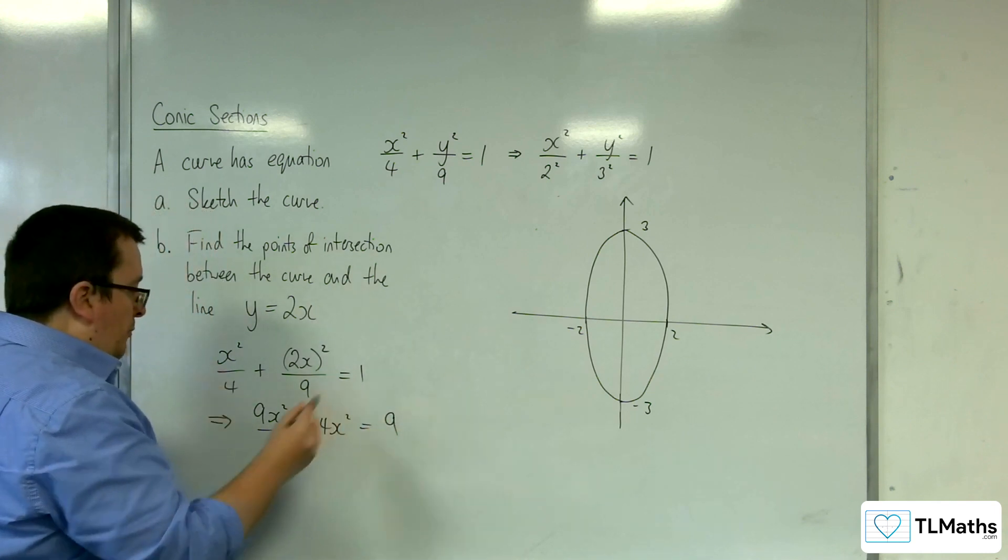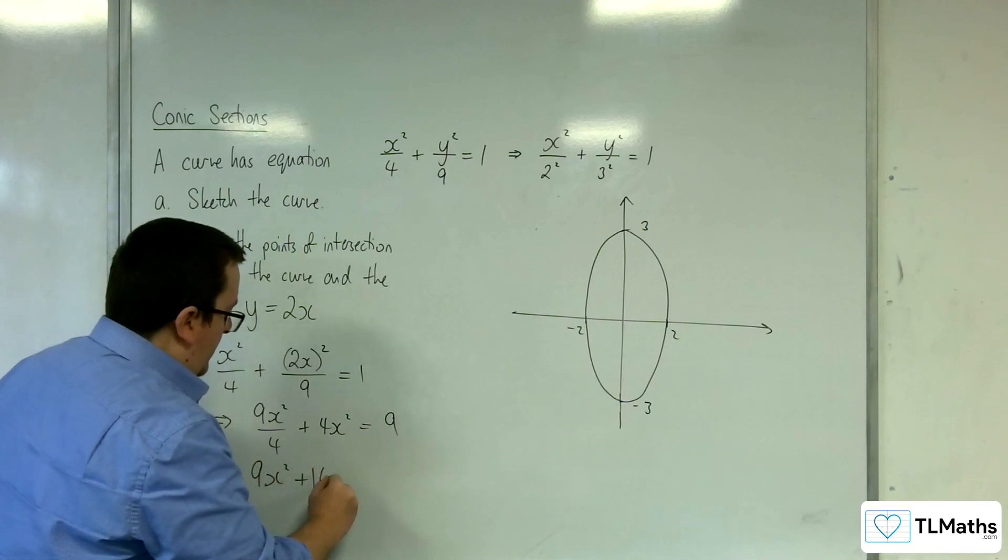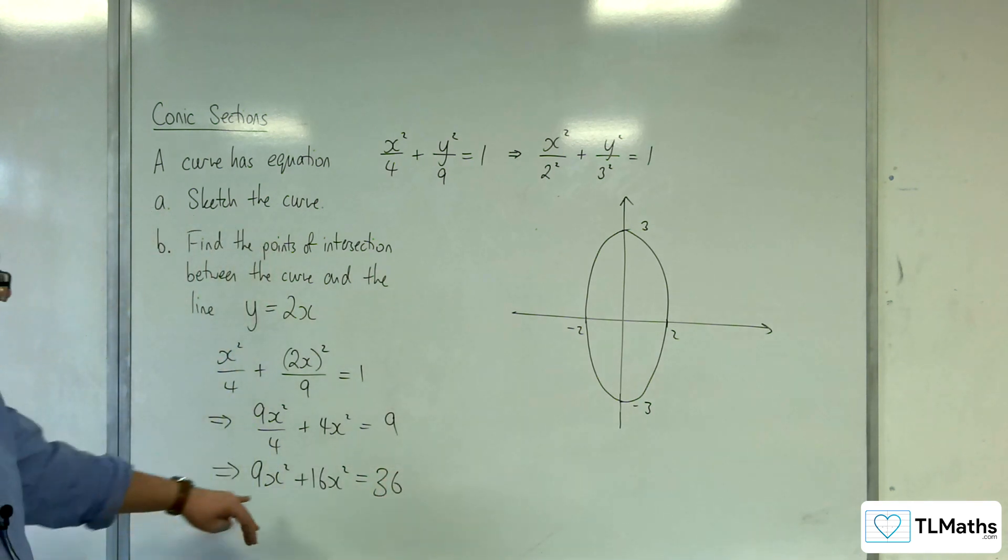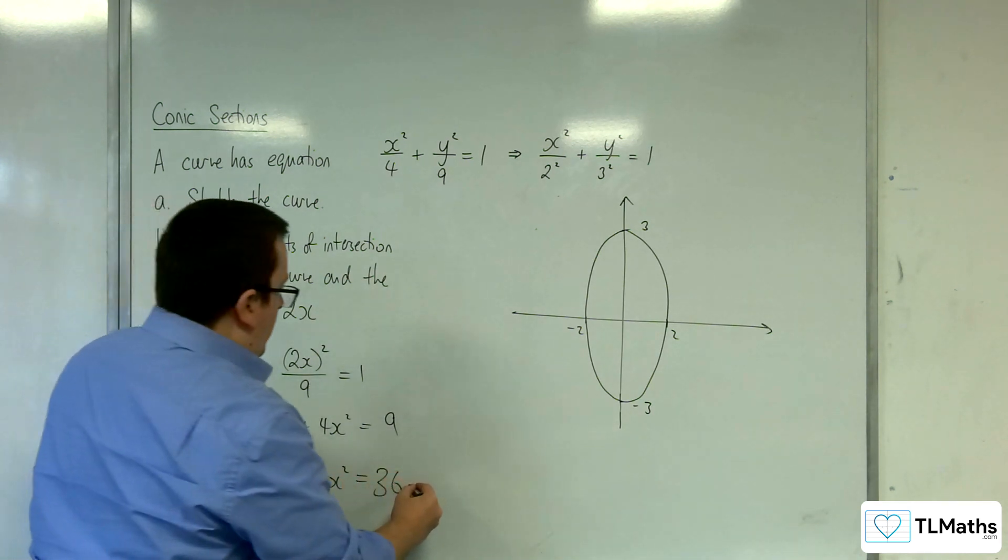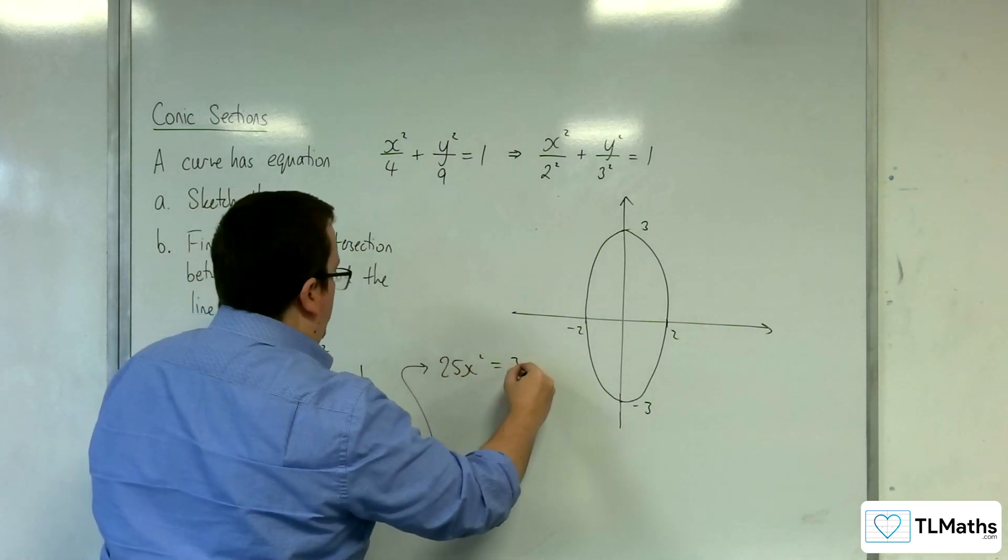And then multiply through by the 4. So we get 9x squared plus 16x squared equals 36. So we've got the 9x squared and the 16x squared is going to make 25x squared equals 36.